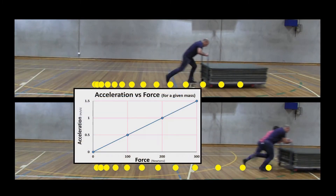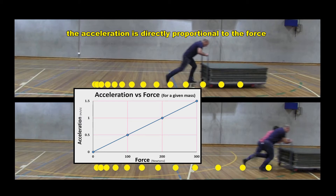A graph of acceleration versus force might look something like this. The more force, the more acceleration. We can say that the acceleration is directly proportional to the force. If you double the force, for example, the object's acceleration doubles. If you increase the force by 20%, the object's acceleration will increase by 20%.